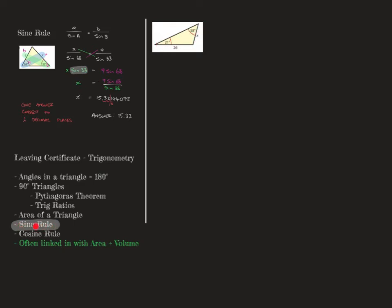The next thing that comes up is the sine rule. We can use the sine rule if we have two sides and two angles. When I say two sides, that means we're looking for one. In this case we have two angles, we have one side, and we're looking for another — so that's considered having two sides. So if we have two angles and two sides, we use the sine rule.